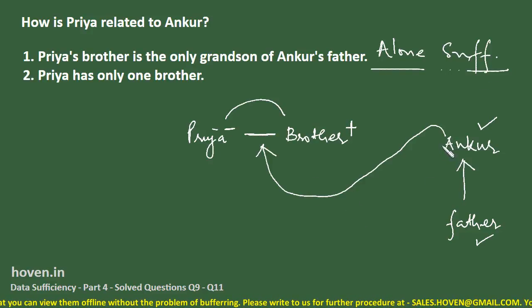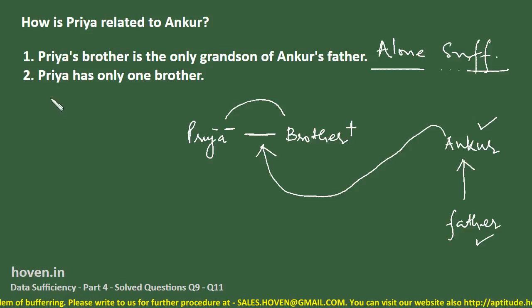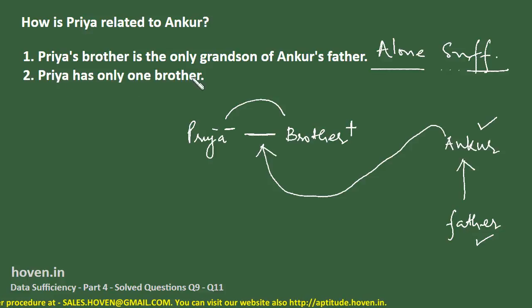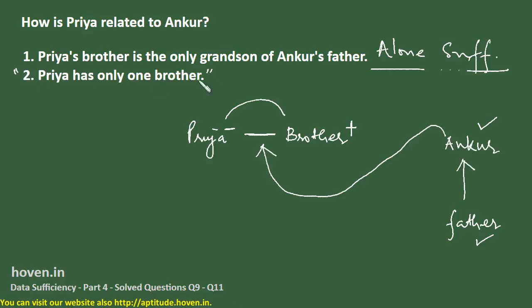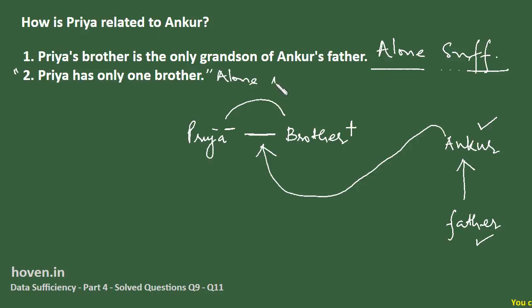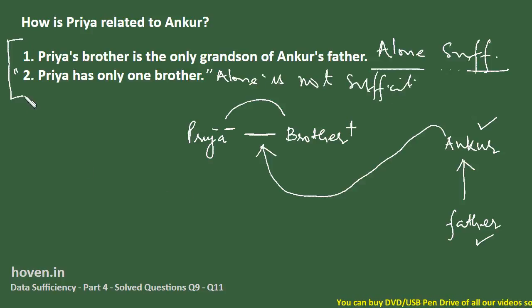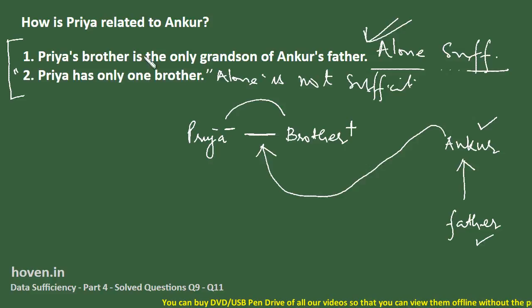From the diagram, Priya should be the daughter of Ankur. Now statement two alone: 'Priya has only one brother.' This tells us about Priya's sibling but gives no hint about Ankur or how Ankur is related to Priya. So statement two alone is not sufficient, and the question of using both together does not arise since statement one is sufficient.